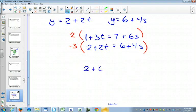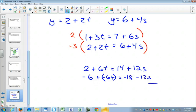2 plus 6t equals 14 plus 12s, and negative 6 plus negative 6t equals negative 18 minus 12s. Add them up. Negative 4 plus 0 equals negative 4, so negative 4 is equal to negative 4.